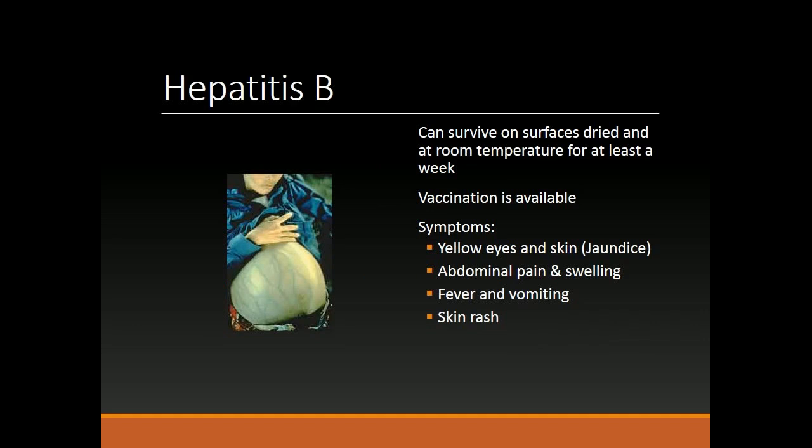Symptoms of Hepatitis B include: yellow eyes and skin (jaundice), abdominal pain and swelling, fever and vomiting, and skin rash.